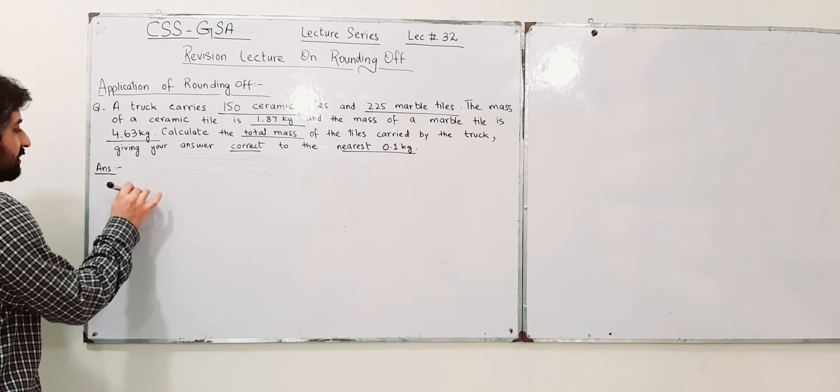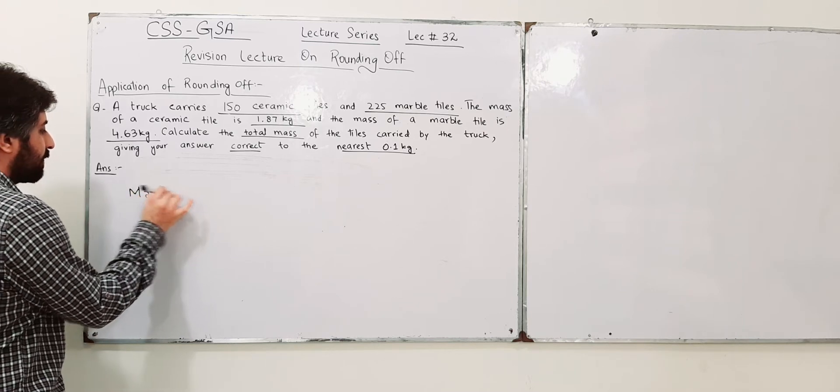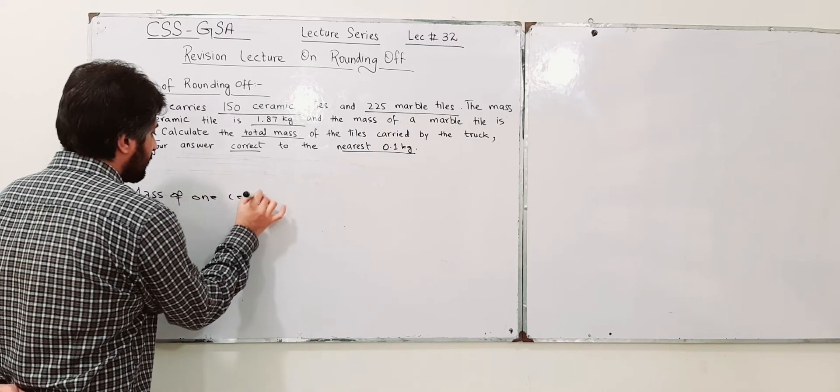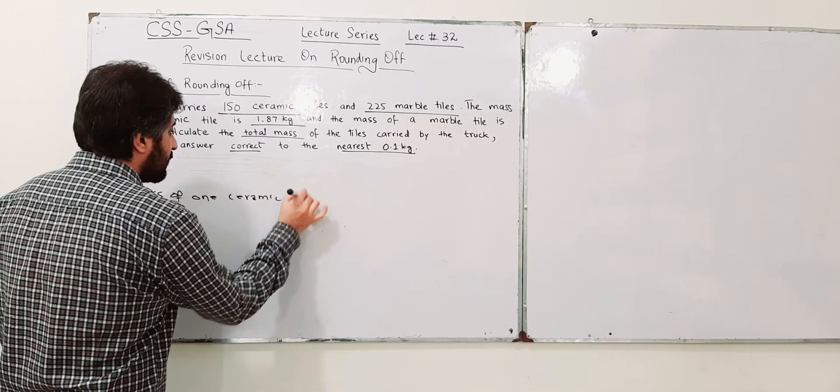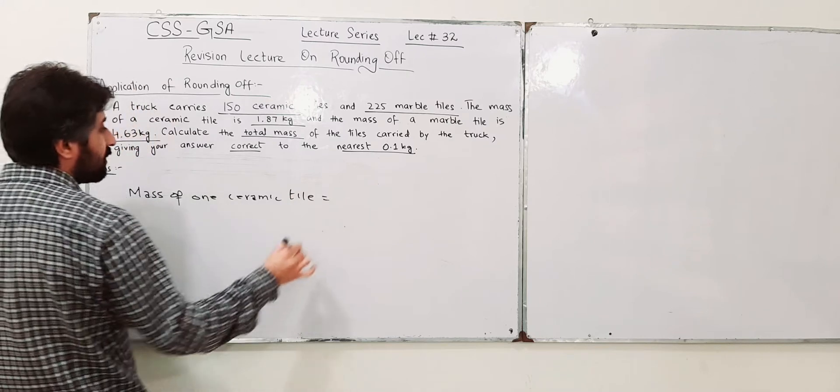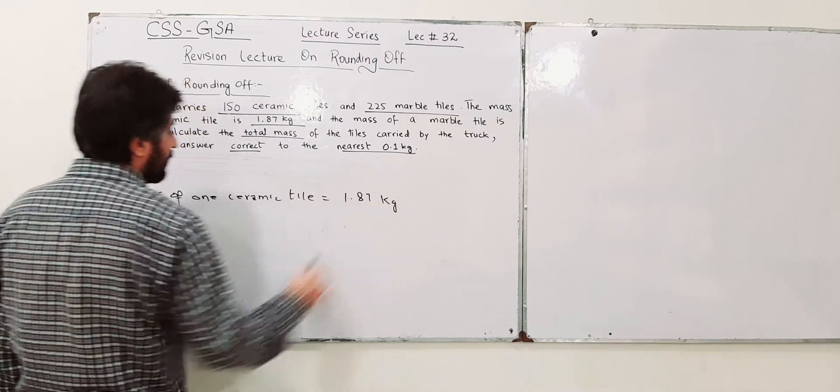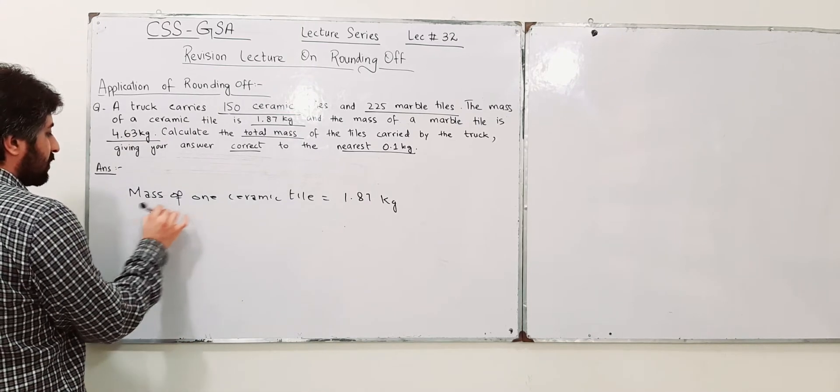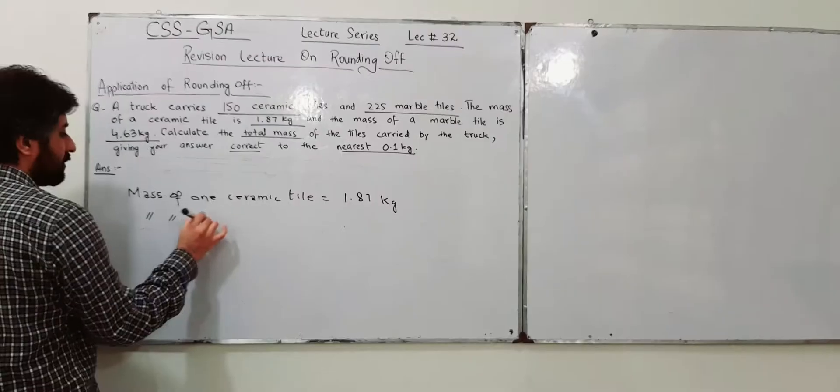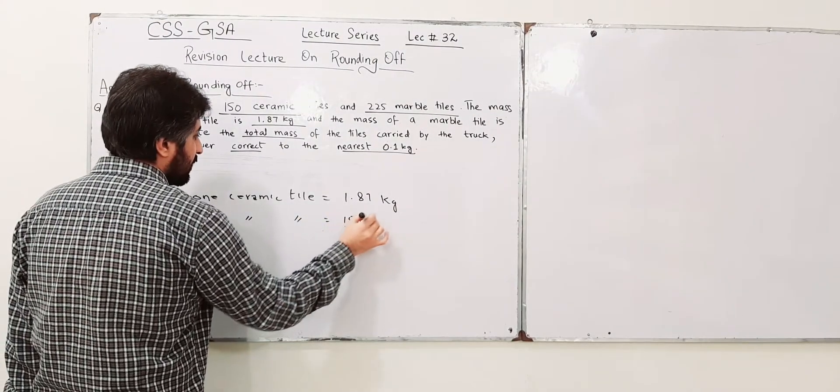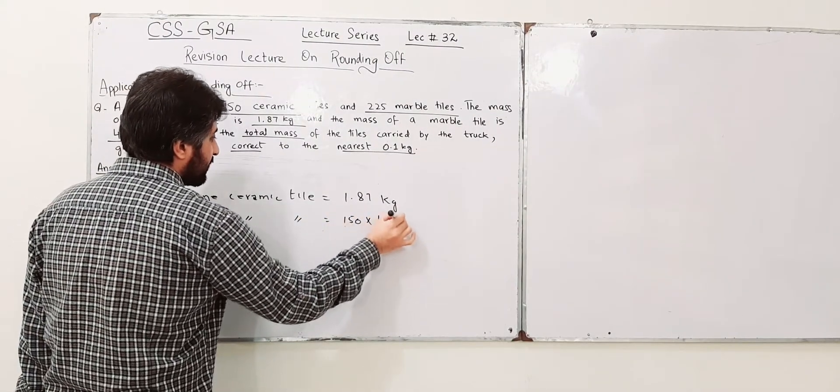So, first of all, mass of 1 ceramic tile is equal to 1.87 kg. So, mass of 150 ceramic tiles will be 150 into 1.87 kg.